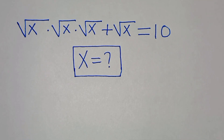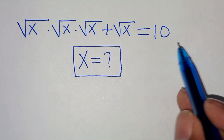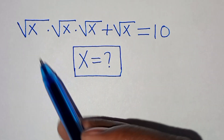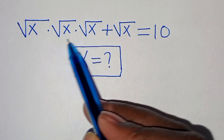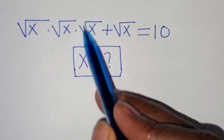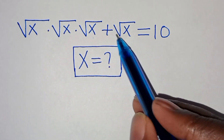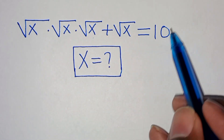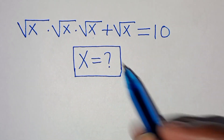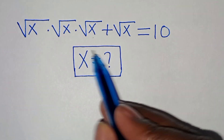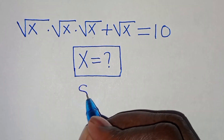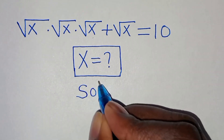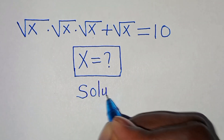Welcome. Let's solve this algebra problem: the square root of x times the square root of x times the square root of x, plus the square root of x, is equal to 10. We need to find the values of x.